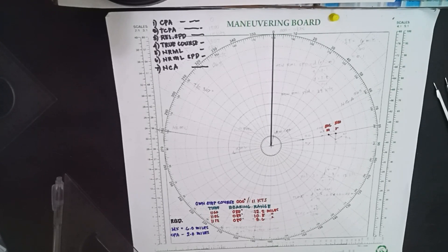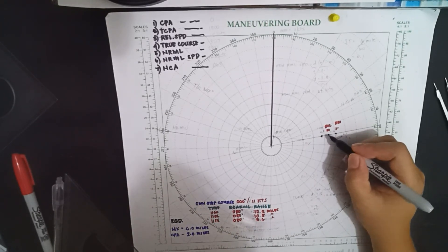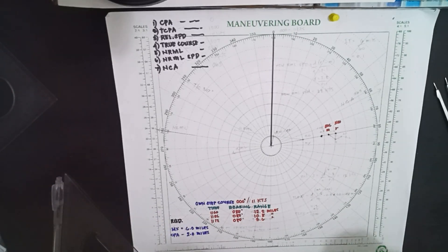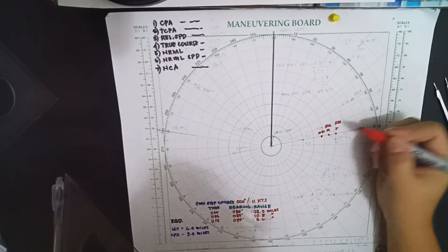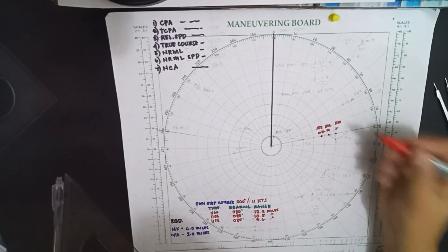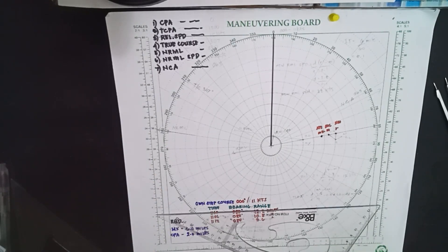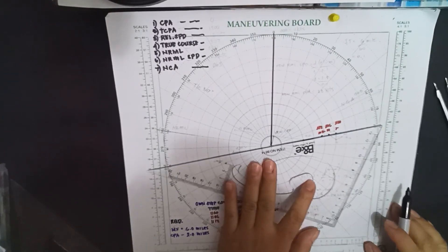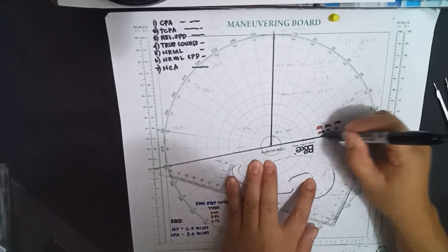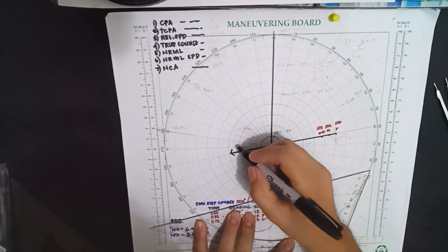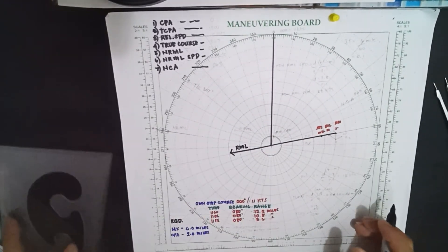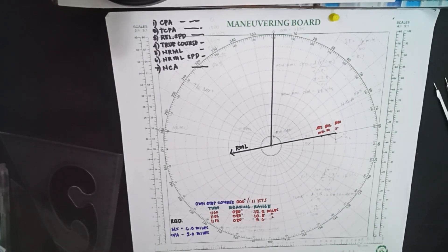The third bearing at 1112 hours is 080 degrees, 9.6 miles. This will be the third bearing, M2, at 1112. Now we are going to connect from the first bearing to the third bearing. This will be our RML. As you can see, we have a zero CPA.